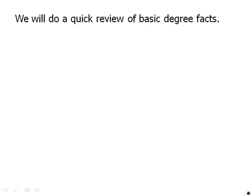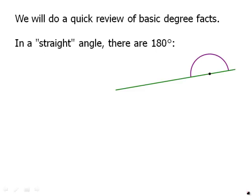We'll do a quick review of basic degree facts. In a straight angle, there are 180 degrees. And of course, remember, a straight line can go in any direction, but if there's any point on the straight line, all the way around from one side of the line to the other, that's 180 degrees.